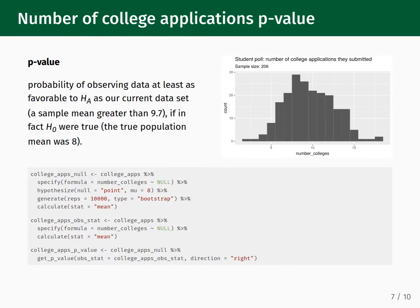If the concept of the p-value still feels a bit abstract to you, that's perfectly fine. Let's make things more concrete by returning to our college applications example and use the infer package to calculate it. The distribution of our polling results for 206 GMU students is displayed in the histogram on the right. For this dataset, the p-value specifically refers to the probability of randomly polling 206 GMU students about the number of colleges they applied to and obtaining a sample mean that is greater than or equal to 9.7, when, if we had the resources to poll all students at GMU, we would get a mean of 8. Like with the gender discrimination experiment, we will use a random simulation to generate a null distribution.